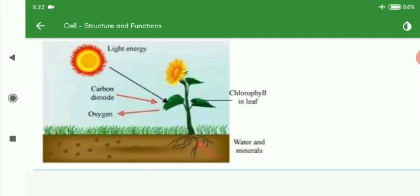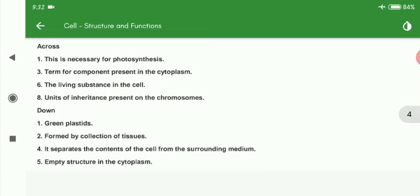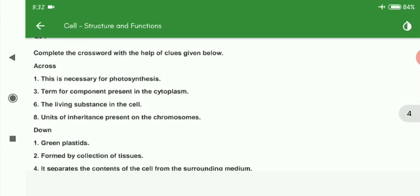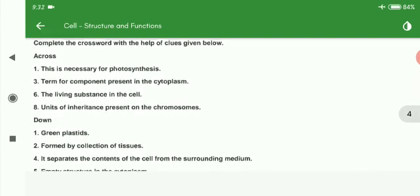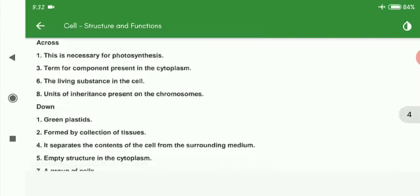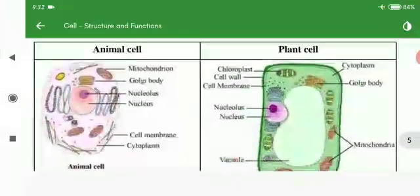By the help of that solar energy, carbon dioxide from the air, and water and minerals from the soil, plants are capable of making their food. Now this is a crossword puzzle you have to go through. Below you can see a question related to the difference between plant and animal cells.